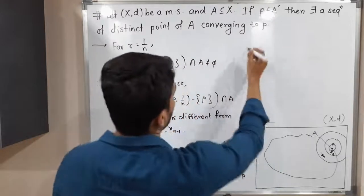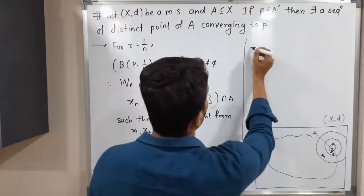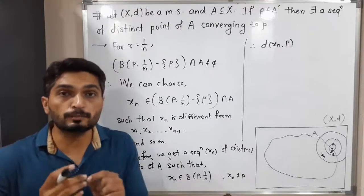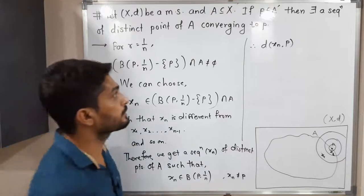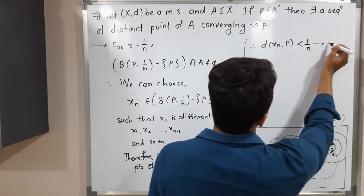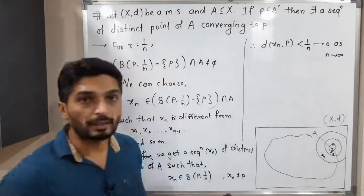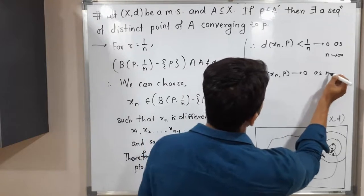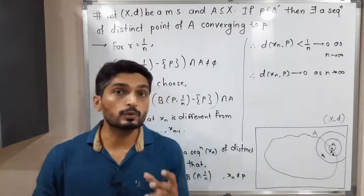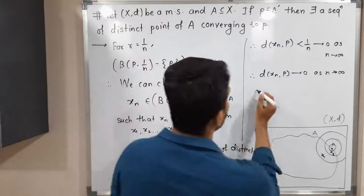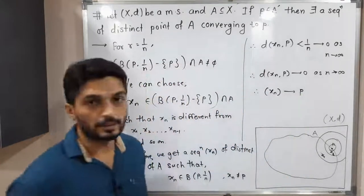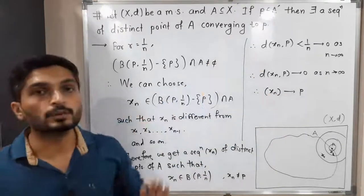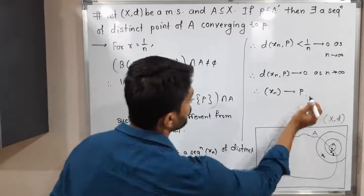Since xₙ lies inside B(p, 1/n), the distance d(xₙ, p) is less than 1/n. Since 1/n tends to 0 as n tends to infinity, the distance d(xₙ, p) goes to 0 as n tends to infinity. That means the sequence {xₙ} converges to point p. So we have obtained a sequence of distinct points of A such that xₙ converges to p, proving the statement. The proof is complete.